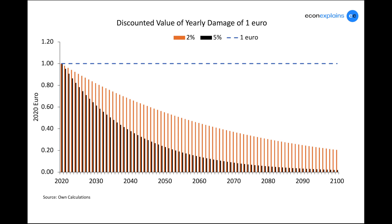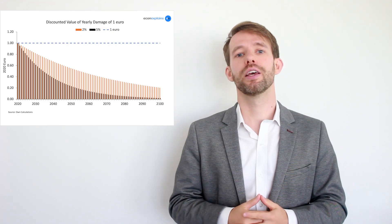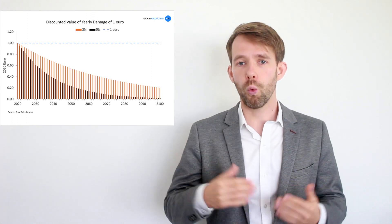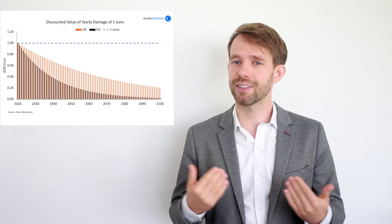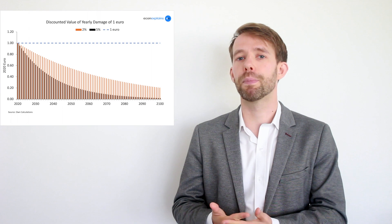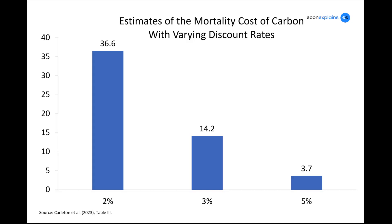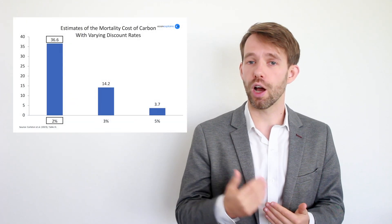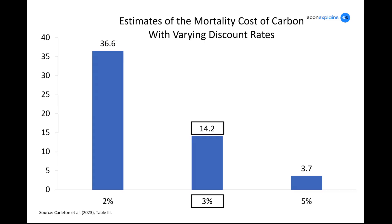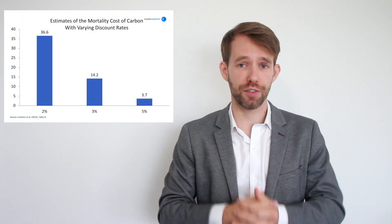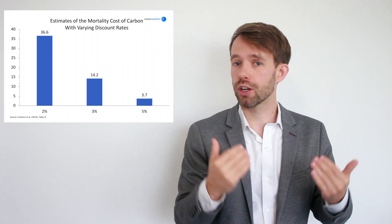So that's why the discount rate matters so much. Now let's switch to actual numbers. In a paper I worked on, which was published in a top economic journal, we analyzed the impact of climate change on mortality, because as temperatures go up, more people die from extreme heat. In the paper, we convert these deaths to a dollar value. The present discounted value of all the damages of 1 ton of CO2 is $36.6 per ton at a discount rate of 2%. With a discount rate of 3%, the damage is $14.2 per ton. And with a discount rate of 5%, it drops down to $3.7 per ton of CO2.